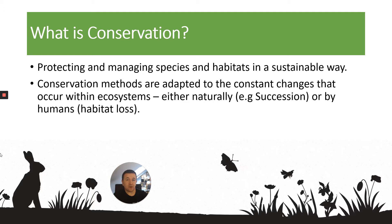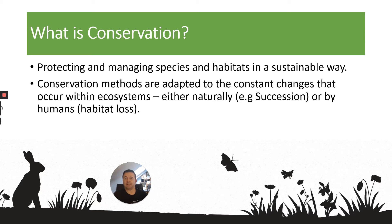A key thing is: what is conservation? Well, it's about protecting and managing species and habitats in a sustainable way. Sustainability is about ensuring that you keep what you have today for future generations, so it's about ensuring that particularly rare species and rare habitats are protected. Conservation methods can be adapted to the constant changes that occur within ecosystems — for example, related to succession — maybe stopping succession at a specific point to ensure a certain species does not become extinct, but also maintaining habitats that might be lost through human intervention.